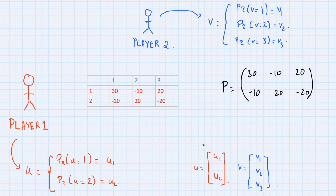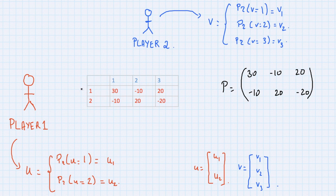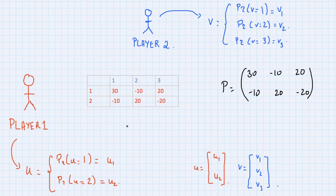Those probabilities should add up to one, which will appear as a constraint in the optimization problem. We define the expected payoff as e = sum over i,j of u_i * v_j * p_ij. For example, the contribution of p12 is weighted by u1 times v2, since the players choose independently. We're just summing up terms to form a certain average.